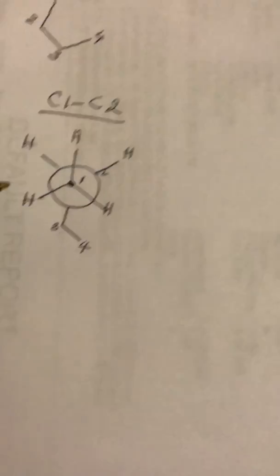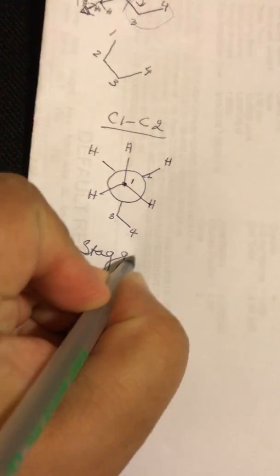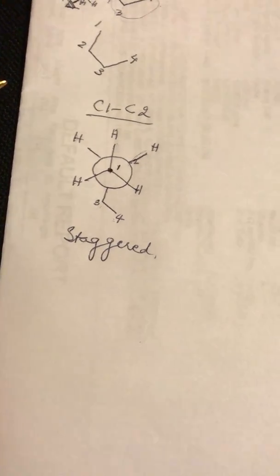Hopefully you can see that this is nothing but the staggered conformation, because between two groups, you're seeing a third group from the back, and so this is a staggered conformation.